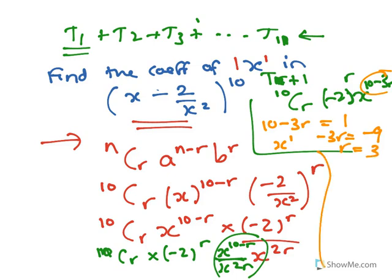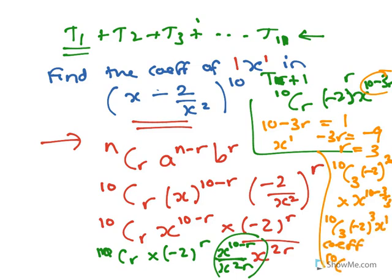And r will equal positive 3. So that means the actual term would be 10C3 minus 2 to the 3, times x to the 10 minus 3 times 3. So it's 10C3 minus 2 to the 3, x to the 1. So the coefficient is 10C3 minus 2 to the 3.